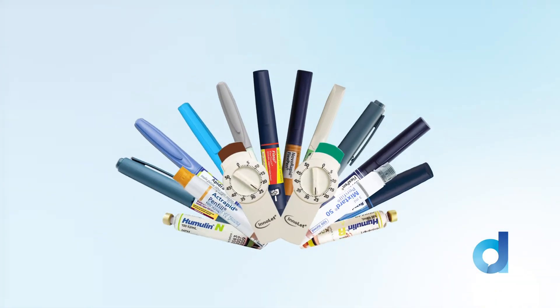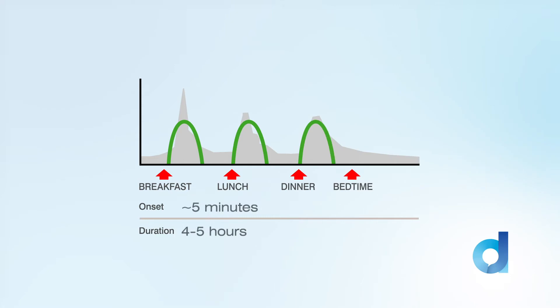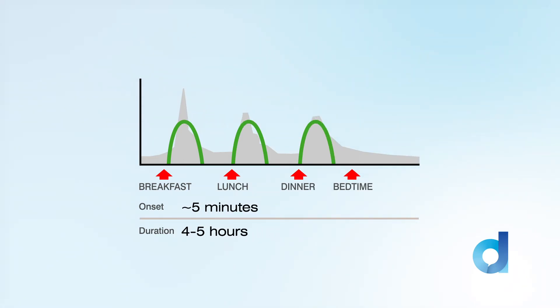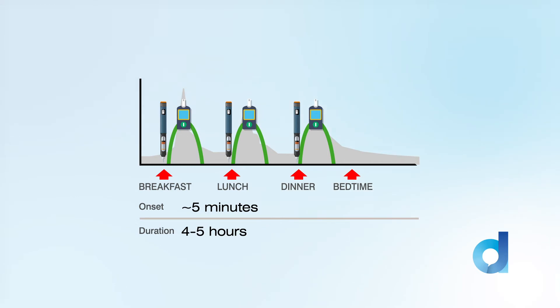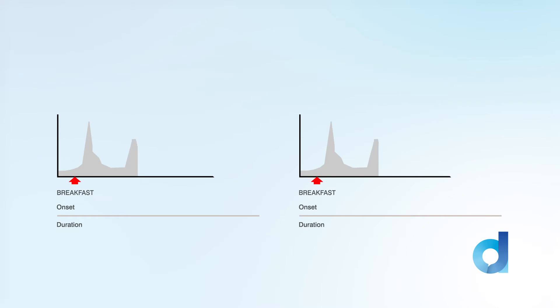There are a number of injectable insulins available in Australia. In order to understand any insulin, you need to know its action profile — that is, how quickly it begins to work, when it peaks, and how long it is active for. If you understand the profile of an insulin, you can work out when it should be given and when you might want to do a BGL to check its effect. In general, there are three categories of insulin based on their action profile.